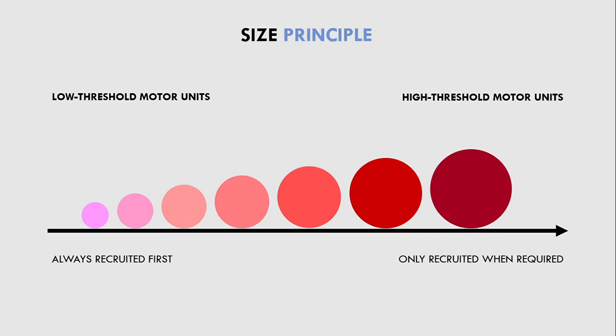It should also be understood that the slow twitch fibers are always recruited first, and if they can't produce enough force alone, then the fast twitch fibers are recruited in addition to the smaller and weaker fibers. So the size principle is basically a scale — the higher the force demands of a task, the more muscle fibers that will be involved.